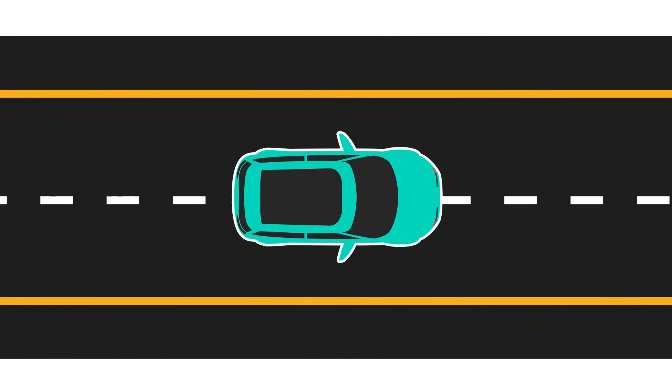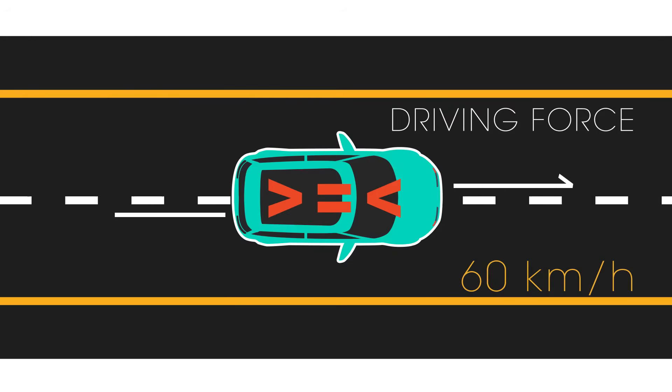First try this question. A car is moving along a straight road at a constant 60 kilometers per hour. The forward force from the engine is greater than, equal to, or less than the backward frictional forces.